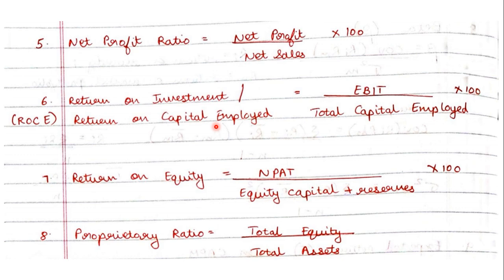Next is return on equity — the formula is net profit after tax upon equity capital plus reserves, into 100. Next is the proprietary ratio: total equity upon total assets. These are the next four ratios — very important — note them down and then we go ahead.